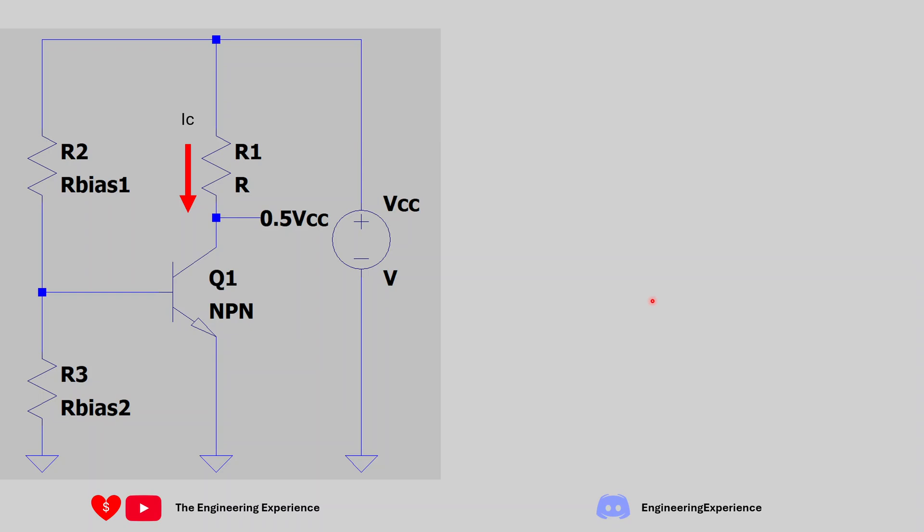So on the screen now you've got the circuit that the question is talking about. We have a grounded emitter amplifier stage with an NPN transistor. We have the VC voltage biased to half the power supply so power supply being VCC over here and this is biased to 0.5 VCC. We have a collector resistor and some biasing over here.